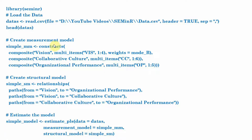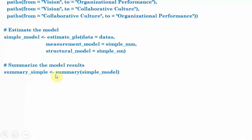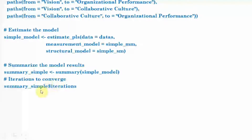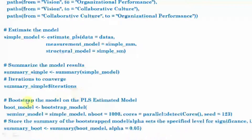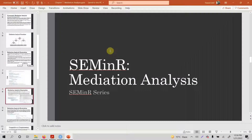Estimate your model — the measurement model. Summarize the results and put them in the summary object. Check for the iterations; they should not be over 300. And then bootstrap your model. You want to bootstrap your estimated model, simple_underscore_model, with the specified properties. Then put the summary of the bootstrapped model into summary_boot. And then we will do our mediation. But before that, let's run our code.